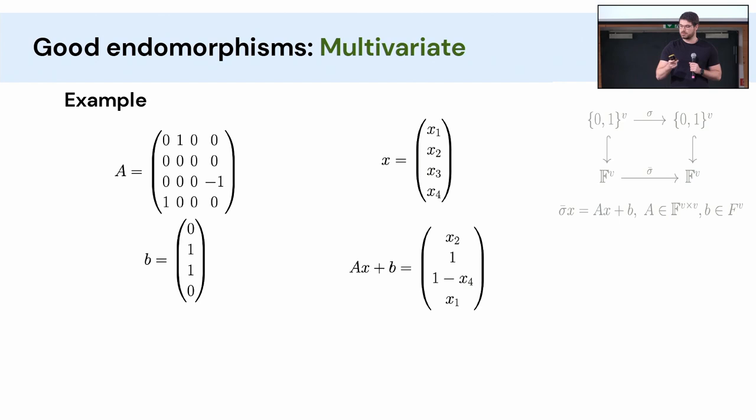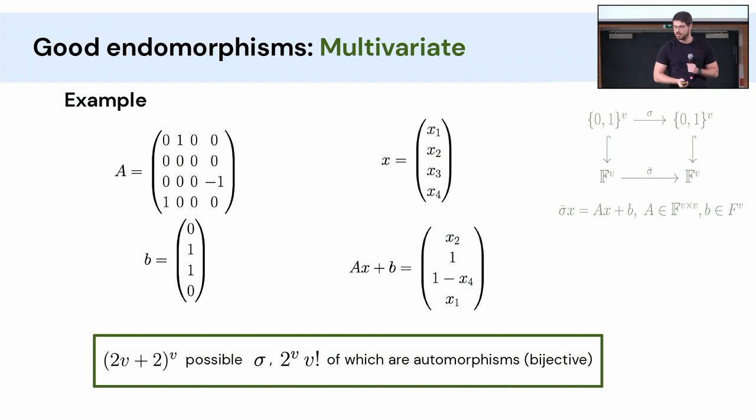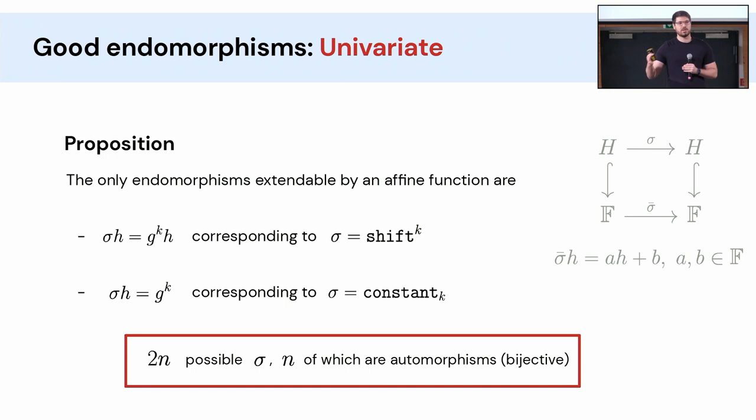What about the multivariate case? You can also classify them in full generality, but here an example is much simpler. Here's an example of a matrix A and vector b that works. And what they do, if you do Ax+b, you just do a permutation of the coordinates. You bit shift some of them. And then some of them you can also set to constant if you want. And that's actually all that you can do. All the sigmas you can do is basically that. Just permuting the coordinates and bit shifting some of them. And if you want, set some of them to constants. And if you count how many sigmas you get by doing that, you get these expressions. And then you can see that it's quite larger than what we got in the univariate case. So in some sense by going to the multivariate domain, you get more degrees of freedom in your arithmetization.